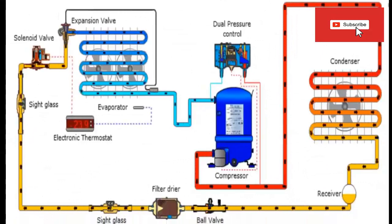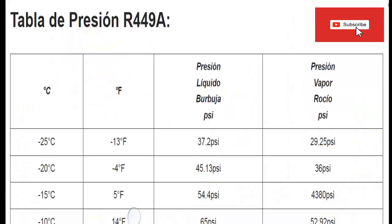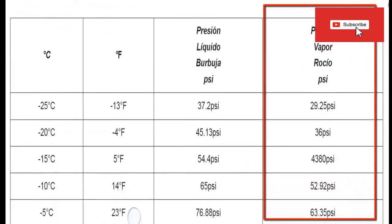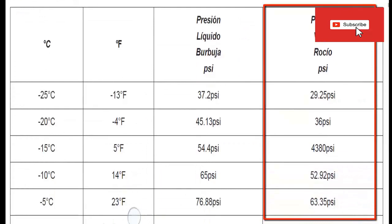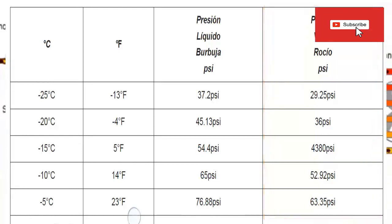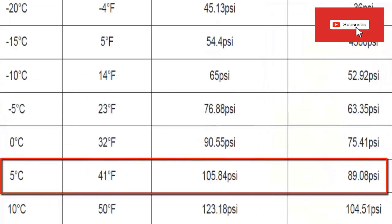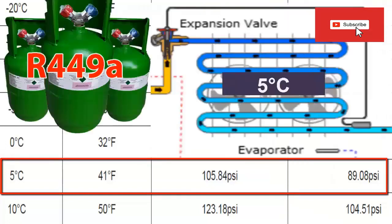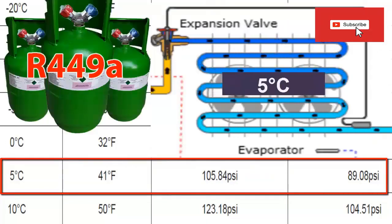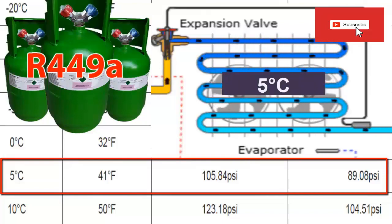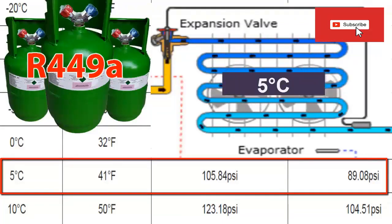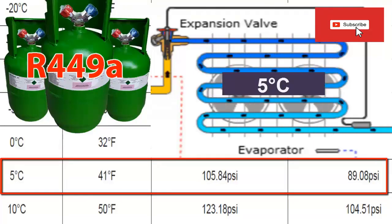Another question may arise: what pressure value is most recommended to work with? In reality, it is more common to work with the dew pressure — that is, to reach the temperature only up to the outlet of the evaporator. However, it is important to note that the bubble pressure is 105.84 psi and the vapor or dew pressure is 89.8 psi. In case of working with an intermediate pressure within these two values, we would be very close to reaching 5 degrees — not at the entrance nor at the exit of the evaporator, but approximately in the middle of the evaporator.